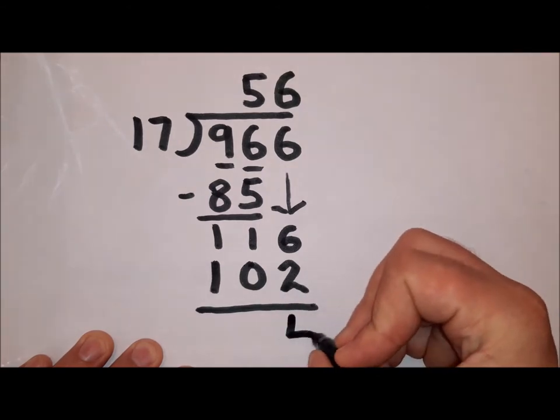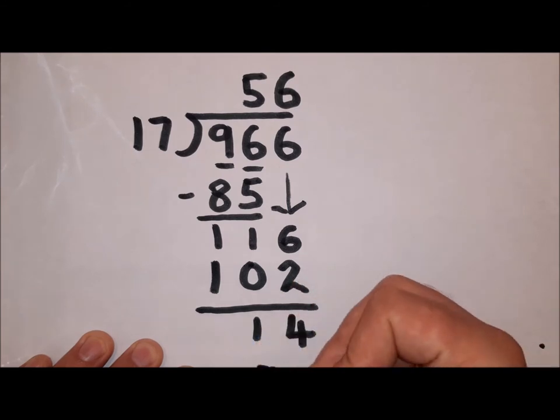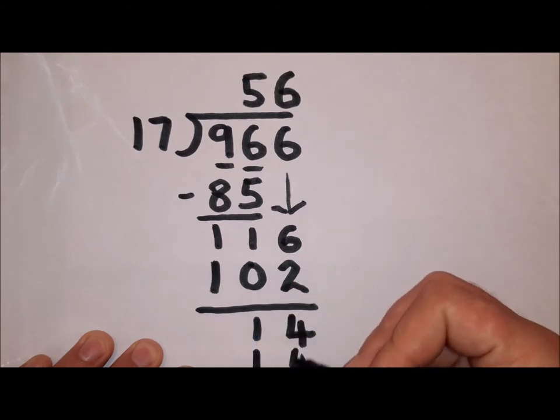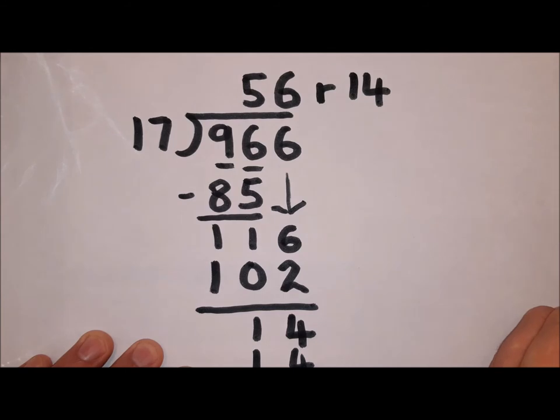I have 56 at the bottom. I now have 14 left over. Those 14 I can't divide by 17. It's not possible. So they are my remainder. So 966 divided by 17 is 56 remainder 14.